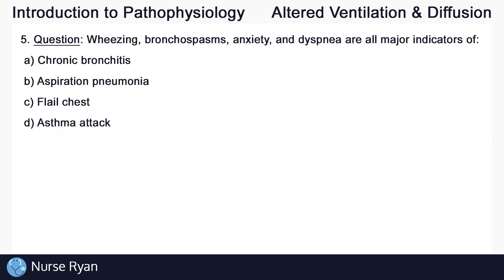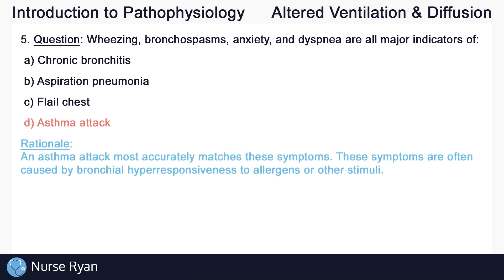Question number five. Wheezing, bronchospasms, anxiety, and dyspnea are all major indicators of — the answer is D: an asthma attack. An asthma attack most accurately matches these symptoms. These symptoms are often caused by bronchial hyper-responsiveness to allergens or other stimuli.